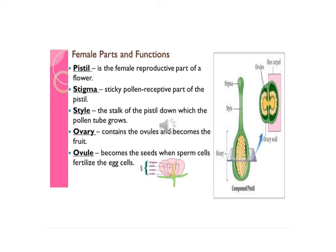The ovary contains ovules which become the fruit, and the ovules become seeds when the male gametes enter and fertilize them.